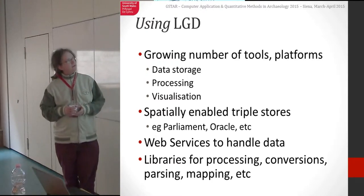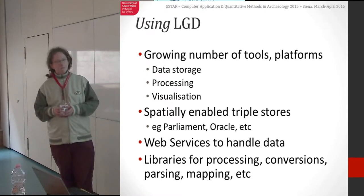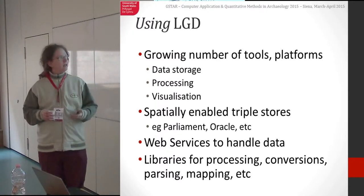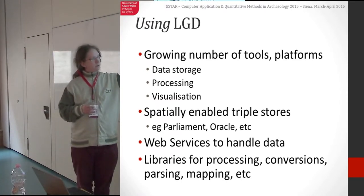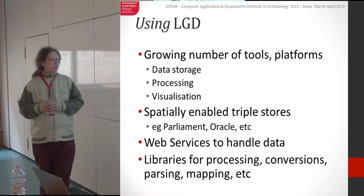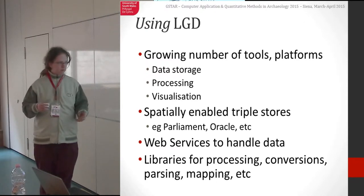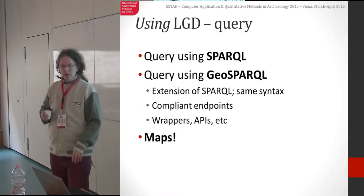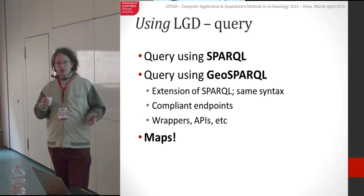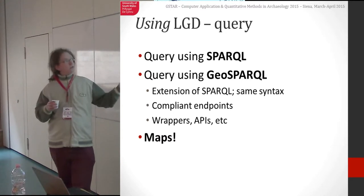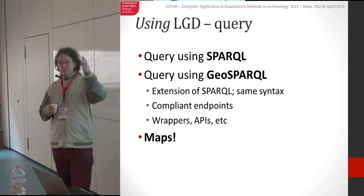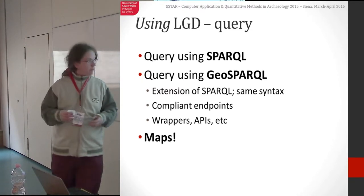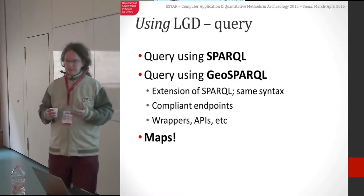There's a growing number of tools and platforms out there for storage, processing, and visualization. It's not a matter of starting from scratch — there are lots of libraries, projects, and code bases; people are churning out all kinds of useful things. It's basically enabled triple stores. I'm now using Parliament — Oracle is no more. And we can use web services to get different systems to talk to each other. For those with an aversion to SPARQL endpoints, we can wrap these things up in APIs, embed them in a website to make things a bit more user-friendly.